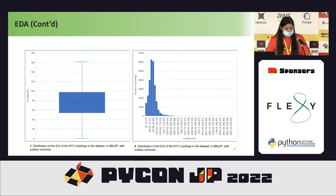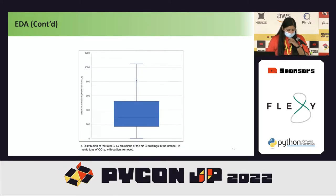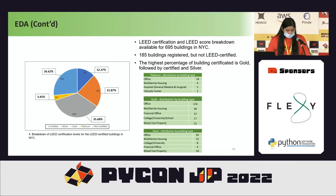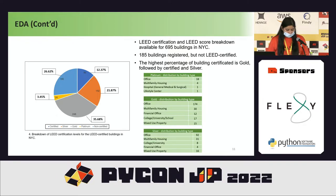For initial data visualization, the Seaborn library was used, which builds on top of Matplotlib and integrates closely with Pandas data structures. This shows the distribution of EUI in the NYC building dataset in KBTU per square feet with outliers removed, and a distribution for GHG emissions. LEED certified buildings were clustered by platinum, gold, and silver certification levels, showing that office buildings tend to be far more certified than other building types. The average points earned as a percentage of total points available for each LEED scorecard category was visualized using Matplotlib.